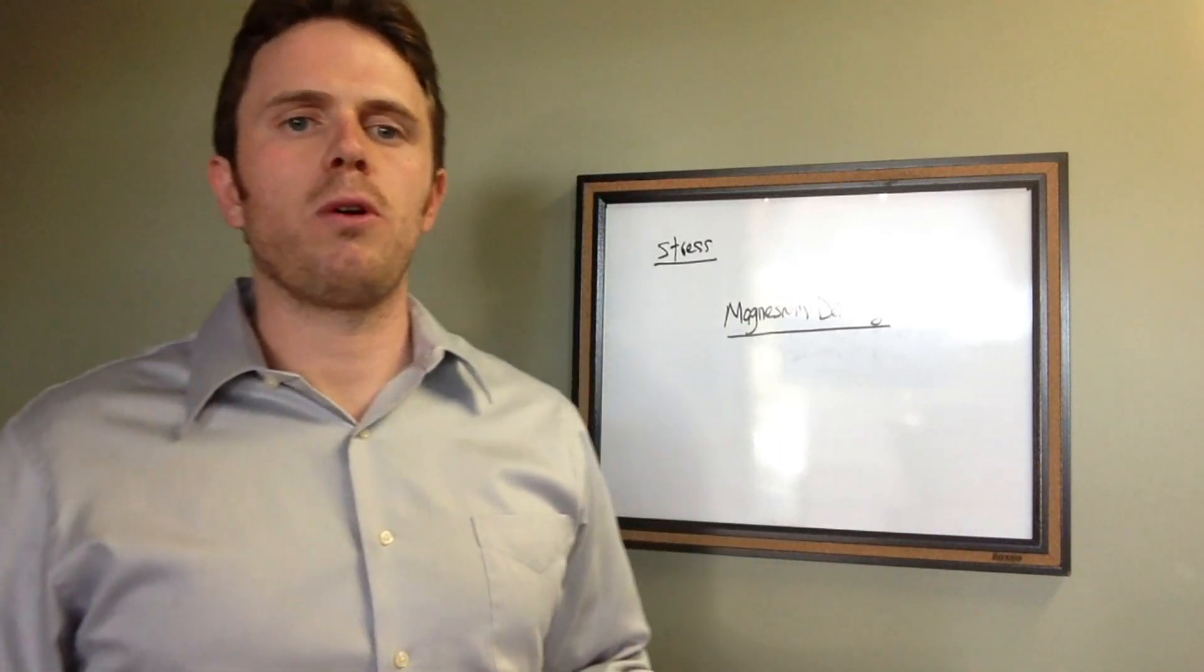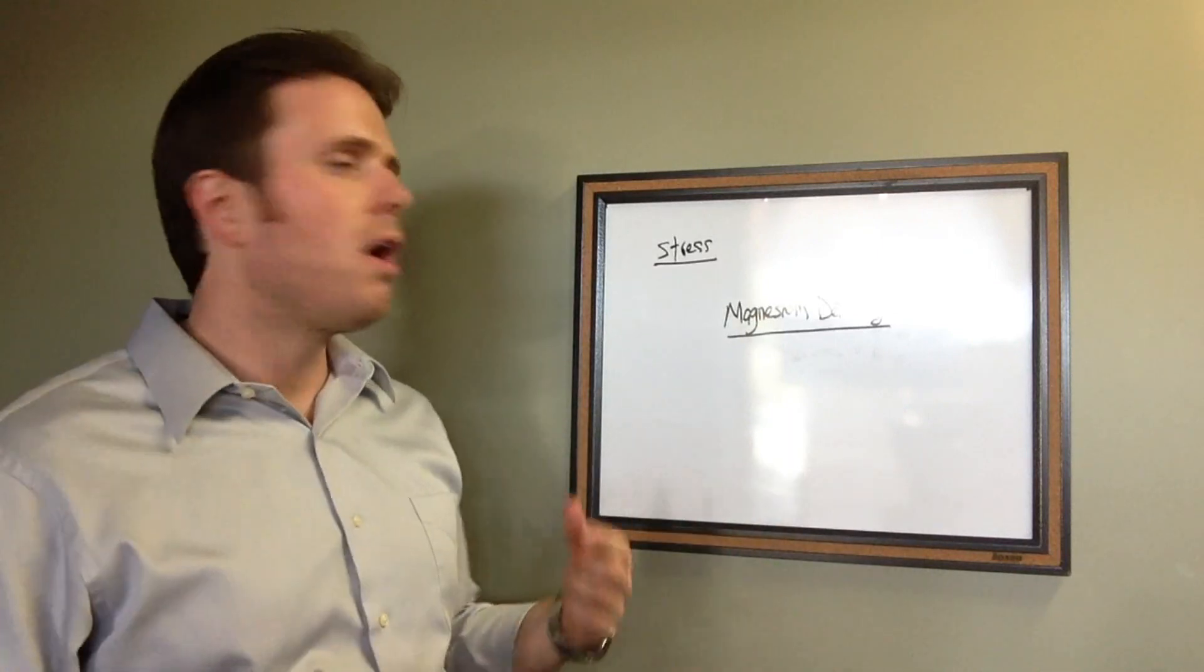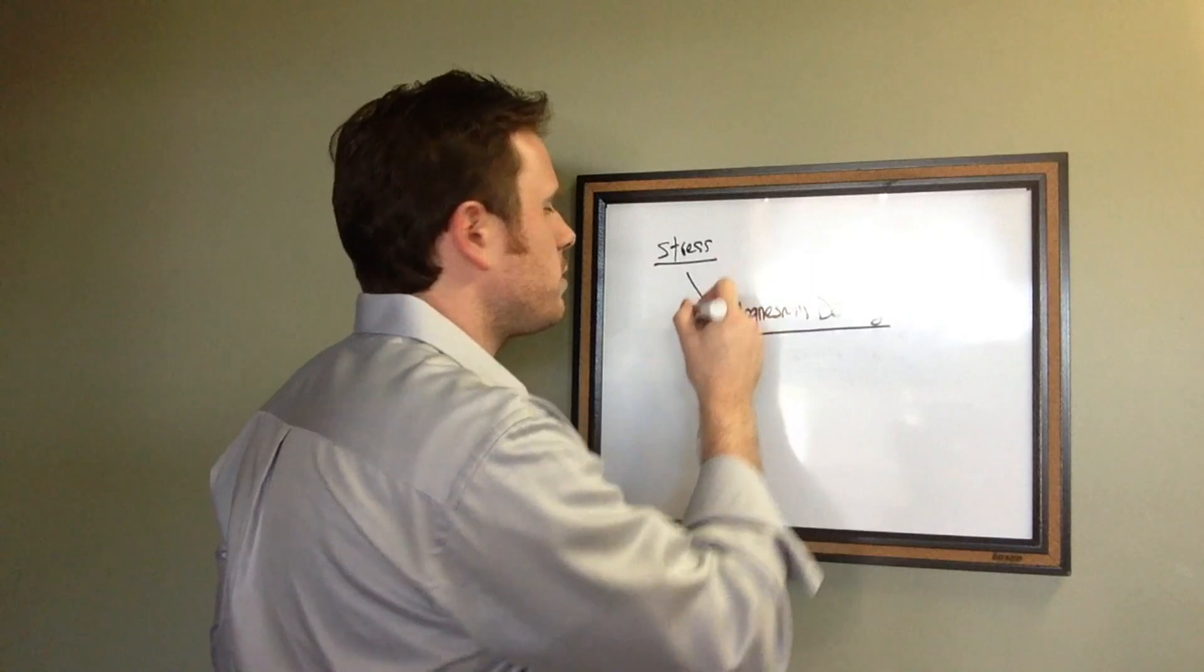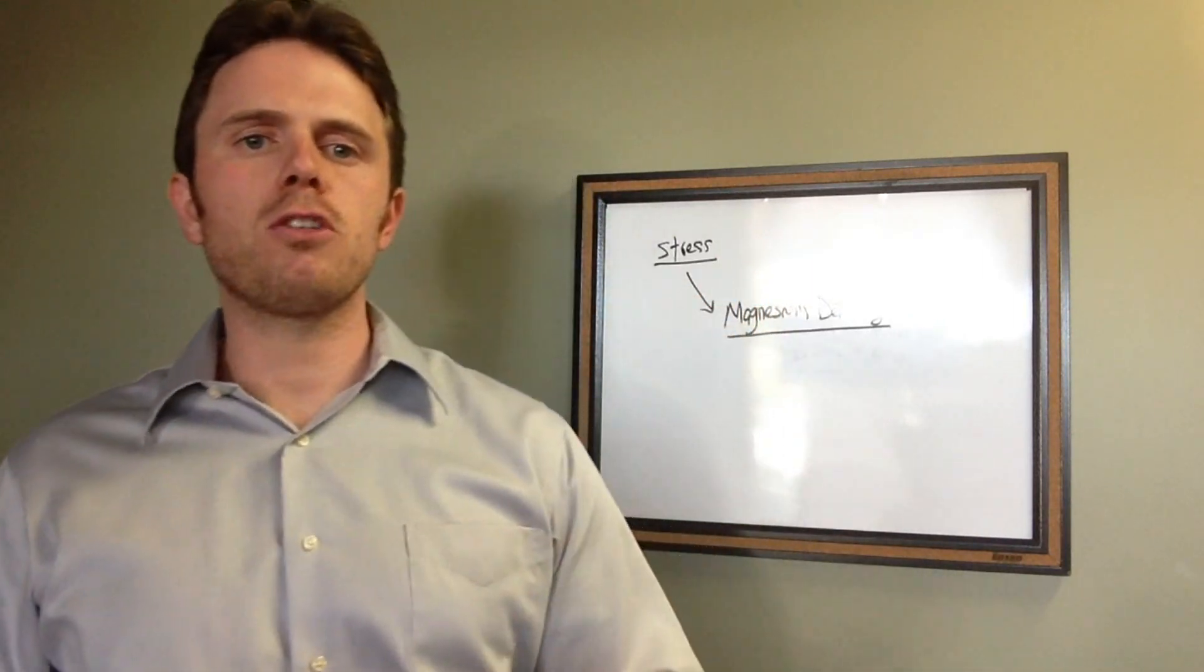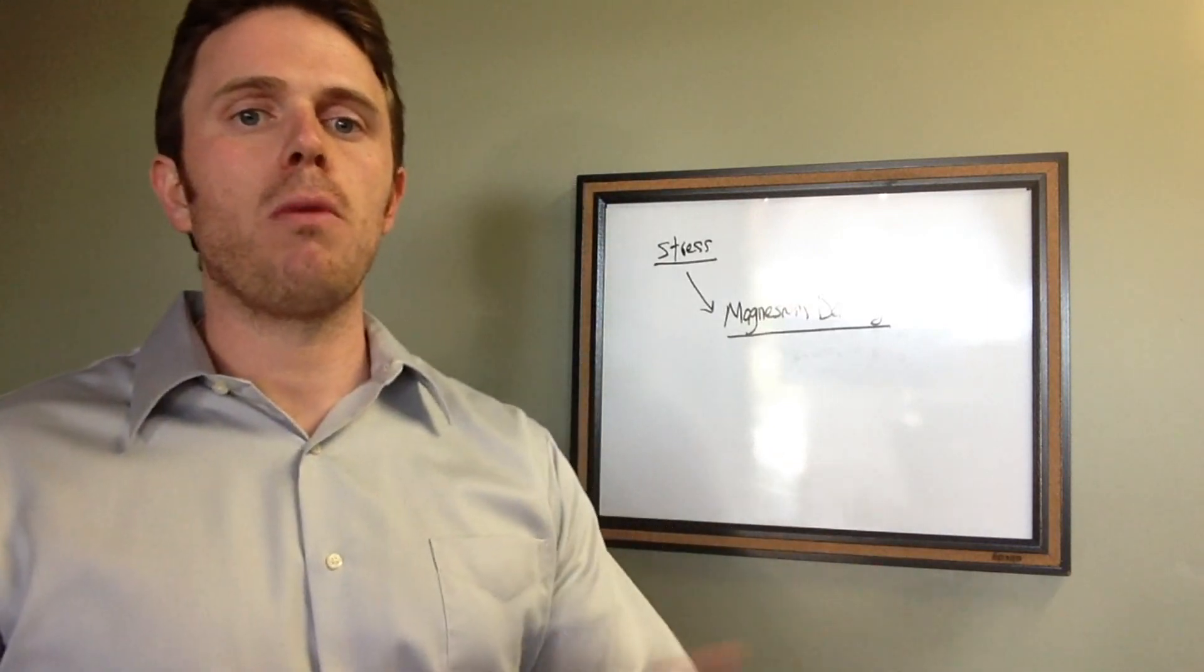Now cortisol is a stress hormone, it's a glucocorticoid steroid and when cortisol goes out of balance it will cause us to burn through our magnesium faster. Stress can be from chemical sources such as food or toxicity, physical sources like chronic pain, injuries, over or under exercise, and also from emotional issues.